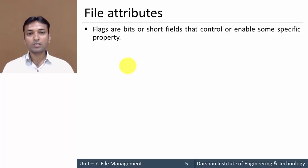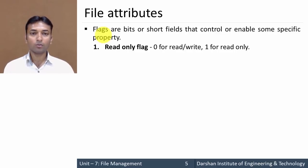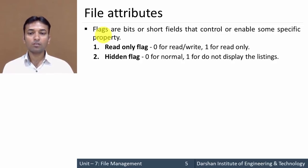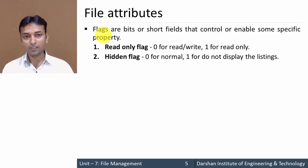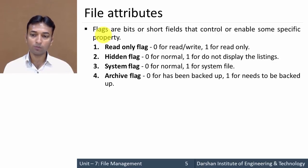The second category of attributes uses flags — bits or short fields that control or enable some specific property. The first is the read-only flag: value 0 means the user is allowed to read and write; value 1 means the user is only allowed to read. The second is the hidden flag: value 0 means unhidden (normal); value 1 means it is hidden and will not display in the listing. The third is the system flag: 0 for normal file, 1 for system file.